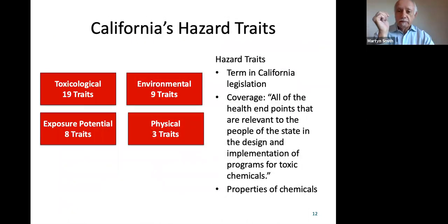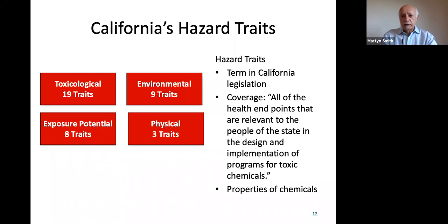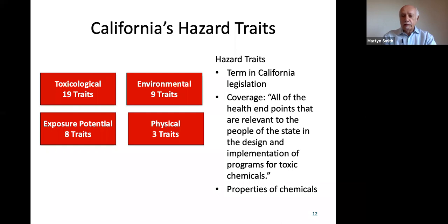The California EPA has sponsored much of our work, and California is somewhat unique in that it has particular things written into legislation called hazard traits. There are 19 toxicological traits in this framework, plus other traits such as potential for exposure, ability to cause environmental harm, and bioaccumulation. These are the properties of chemicals which constitute the hazards, and California is theoretically supposed to make decisions based on these hazard traits — so you need to gather information on all of them in order to regulate chemicals in California.